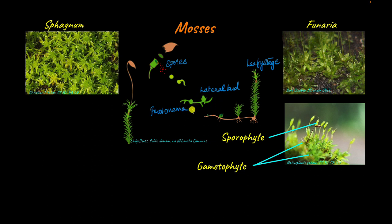On the protonema, a structure called the lateral bud develops, and this gives rise to the second intermediate stage called the leafy stage. This is the leafy stage on top of which the gametophytes were growing, and on this leafy stage the gametophytes then develop.